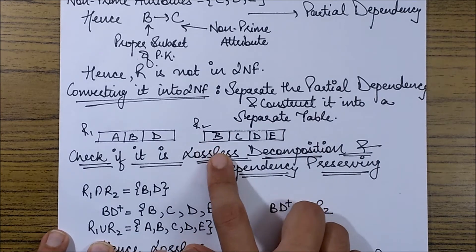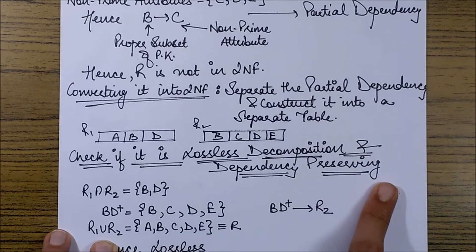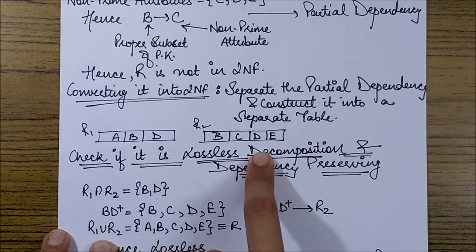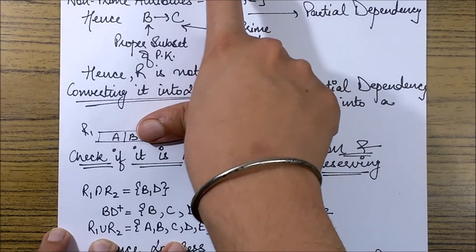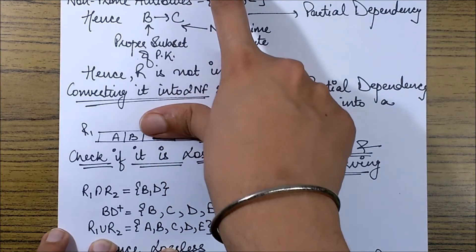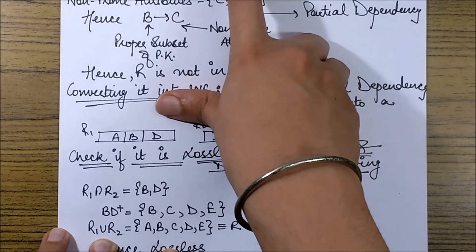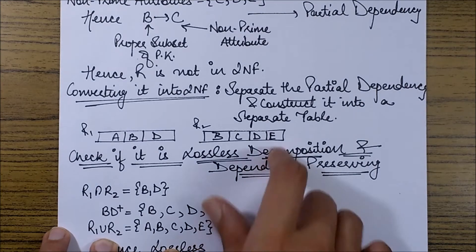Now other thing we need to see is the 2 checks that we had discussed earlier. The lossless decomposition and dependency preserving. So for dependency preserving we know that we should be able to get all the functional dependencies from these sub-relations as we were getting from the basic relation. So B to C we are getting in order to get C to D I need C and yeah I need C and D in the same table. So I would have to insert D itself over here.